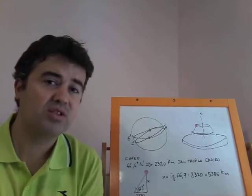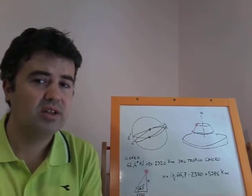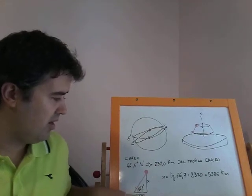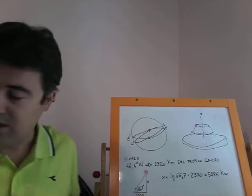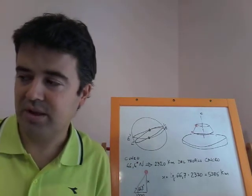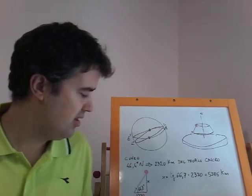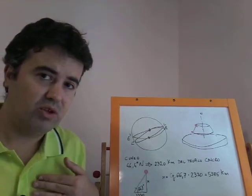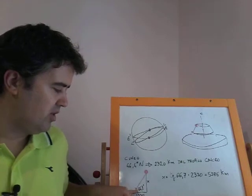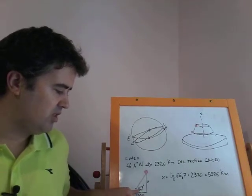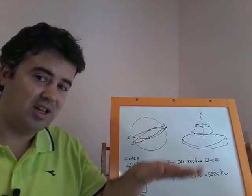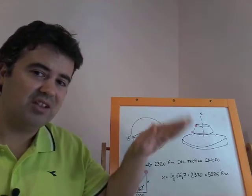Then, with a software, Sun Surveyor, downloaded by Google Play, I have found that, to make an example, on 23 of September, so in 2-3 days, we will have, from my point of observation, from my latitude, I will observe the Moon with an angle of 66.7 degrees.